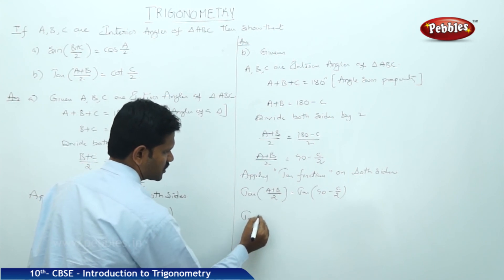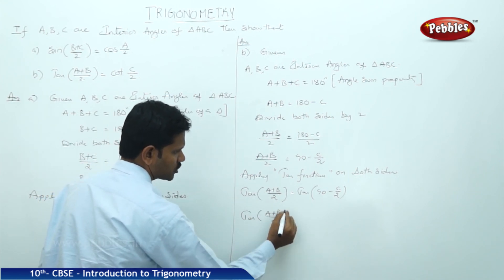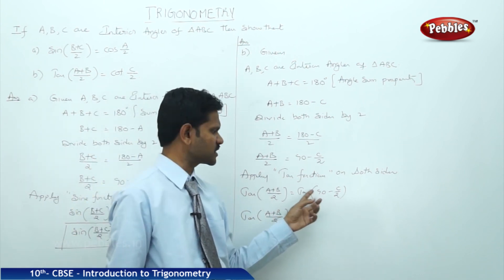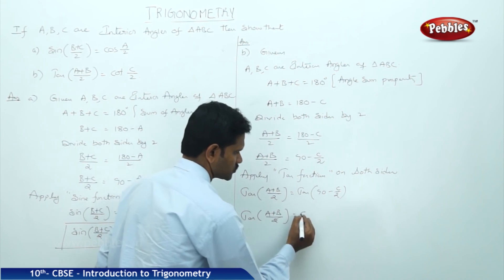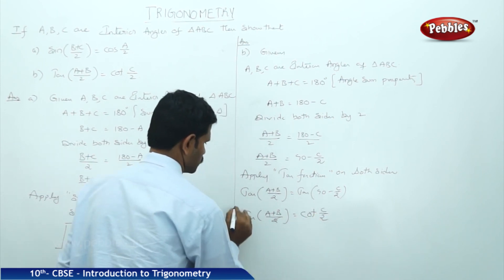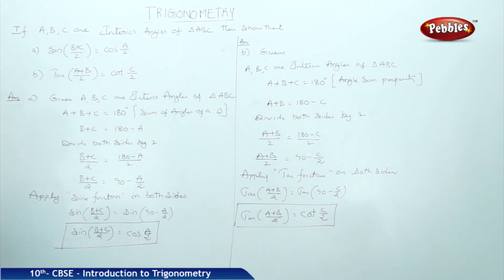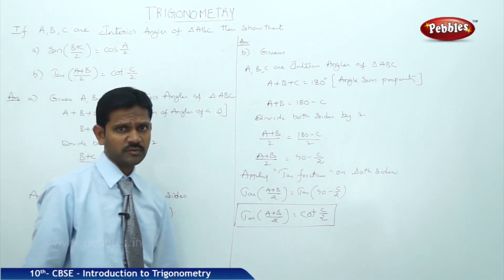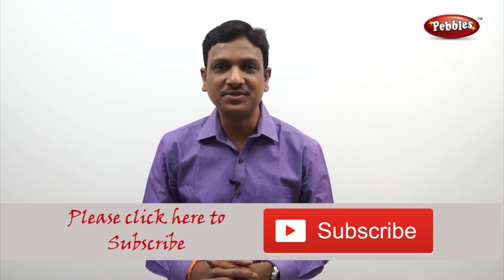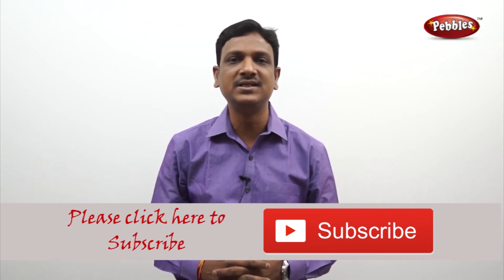That is, tan((A+B)/2) — we know that with respect to 90 degrees, the trigonometric function tan changes to cot. Therefore, tan((A+B)/2) = cot(C/2), hence proved. If you like this video, please give a thumbs up and subscribe to our channel to get more videos on the CBSE syllabus.